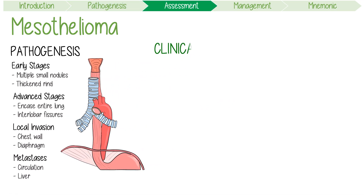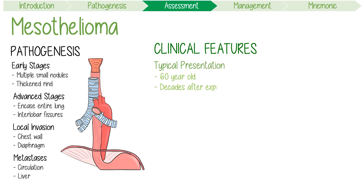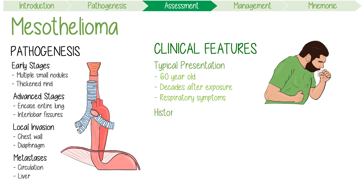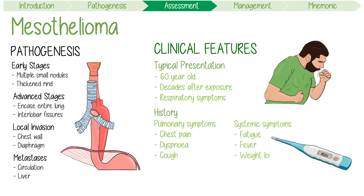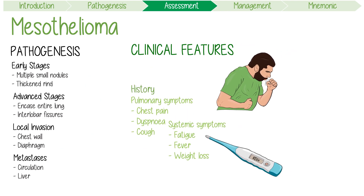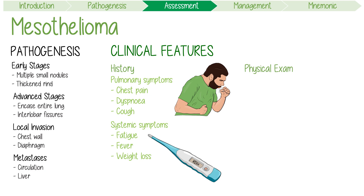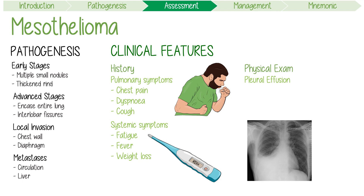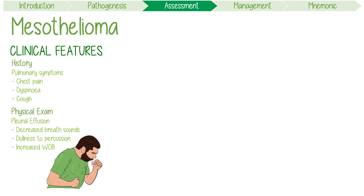Moving on to its clinical features, the typical presentation is a 60-year-old patient presenting decades after asbestos exposure with gradually worsening respiratory symptoms. Key pulmonary symptoms include chest pain, dyspnea, and cough. Systemic symptoms like fatigue, fever, and weight loss are indicative of advanced disease. The main physical exam findings at the time of diagnosis are generally secondary to pleural effusion, which is almost always present. These include decreased breath sounds, dullness to percussion on the affected side, and increased work of breathing.